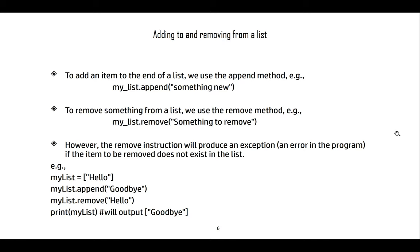Adding and removing from a list can be done easily using the append and remove methods. To add an item to the end of the list we use append: my_list.append('something new') — that could be a string, number, or object. To remove something we use my_list.remove('something to remove'). For strings we must write the exact string to remove. Note that the remove instruction will produce an exception — an error that causes the program to crash — if the item to be removed does not exist in the list.